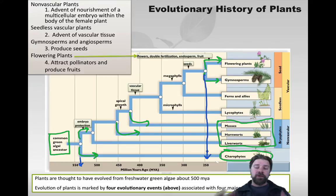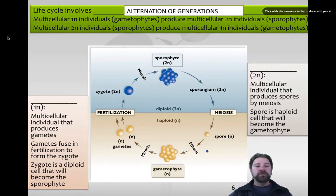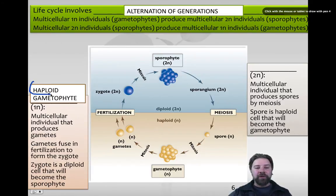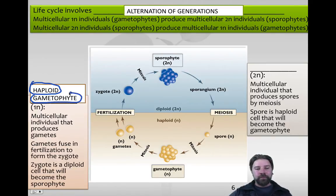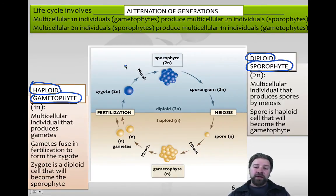The life cycle of plants involves what we call the alternation of generations. We previously studied haploid and diploid in genetics - now we apply it to plants. Multicellular 1n individuals are called haploids, and when we refer to a haploid plant it gets the name gametophyte. These gametophytes are going to eventually produce multicellular 2n individuals called sporophytes. A sporophyte is diploid - it has two sets of chromosomes.